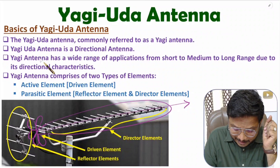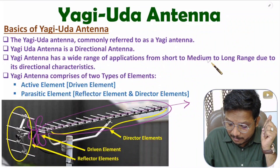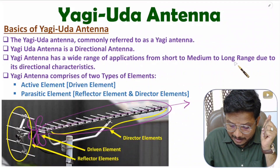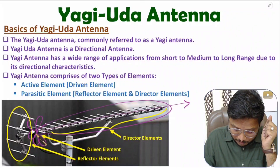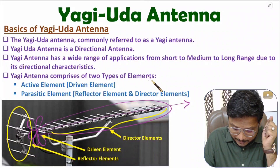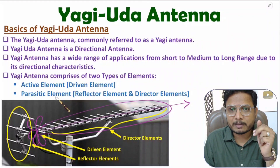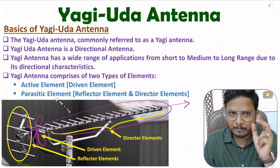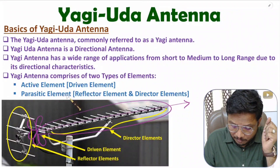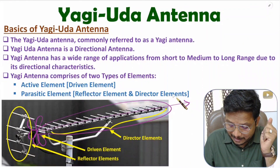We use Yagi antenna in a wide range of applications — for short range, medium range, and long range communication. In this Yagi antenna, we have two types of elements: active element and parasitic element. Active element means we apply a power supply to that element. In parasitic elements, we again have two categories: reflector element and director element.